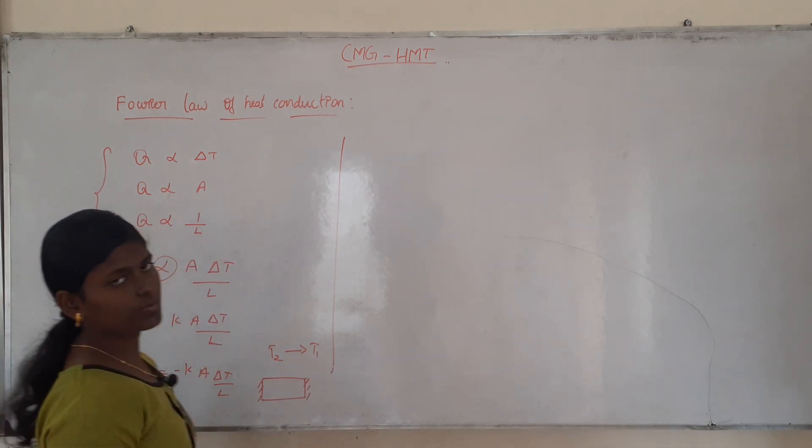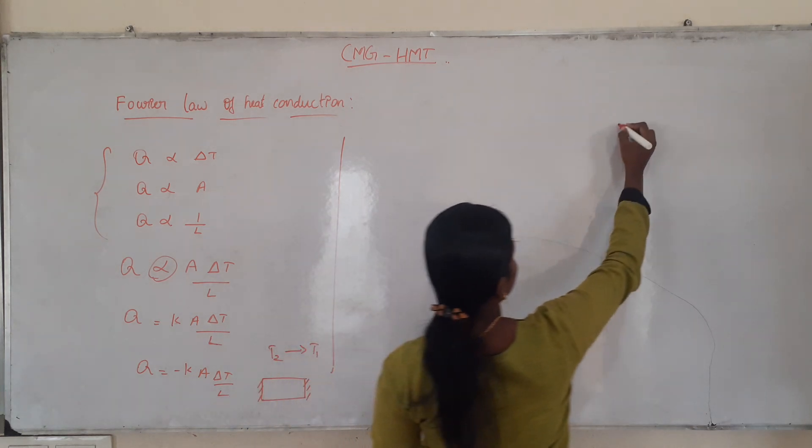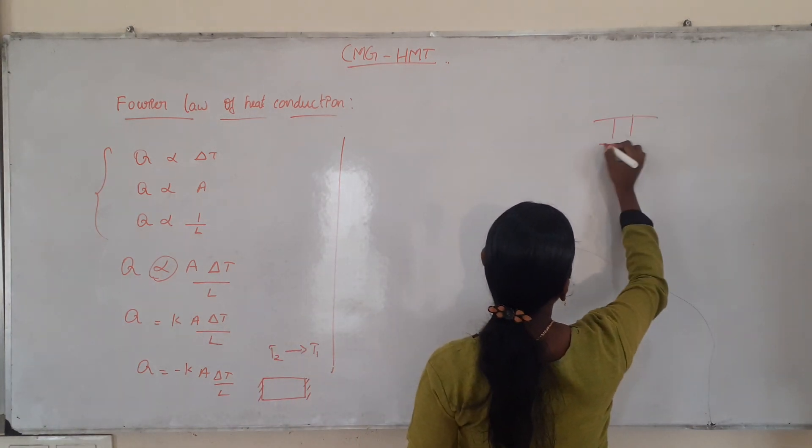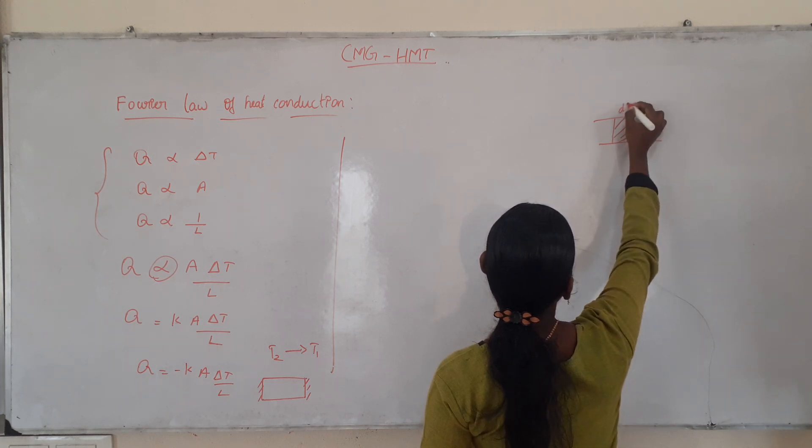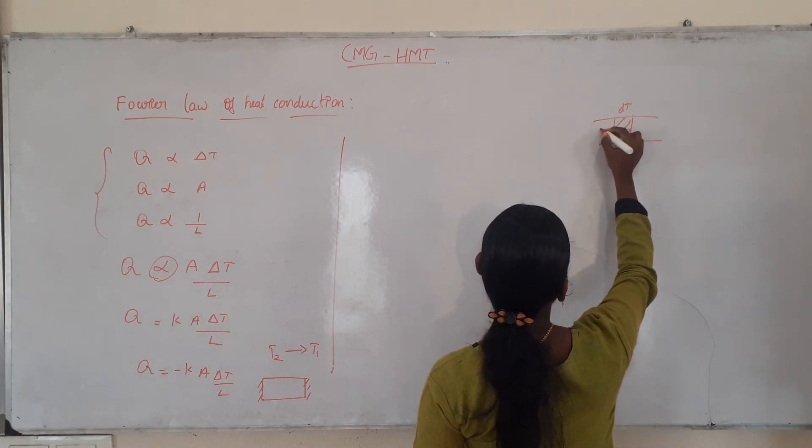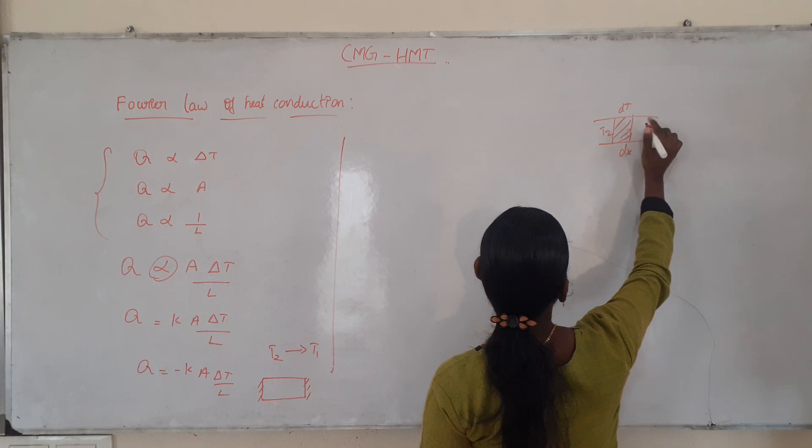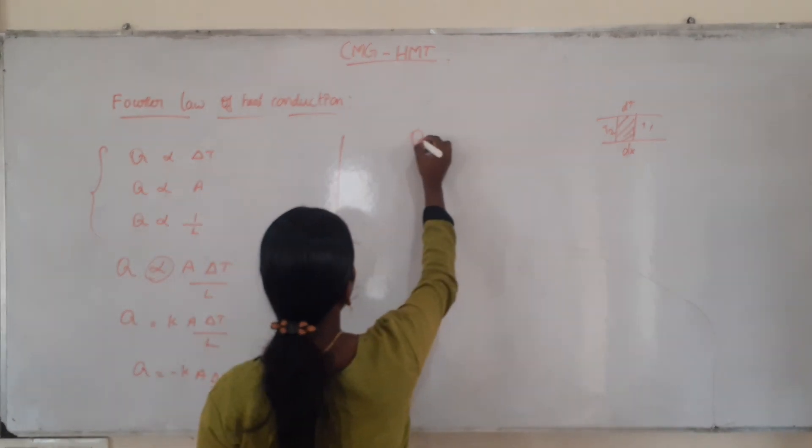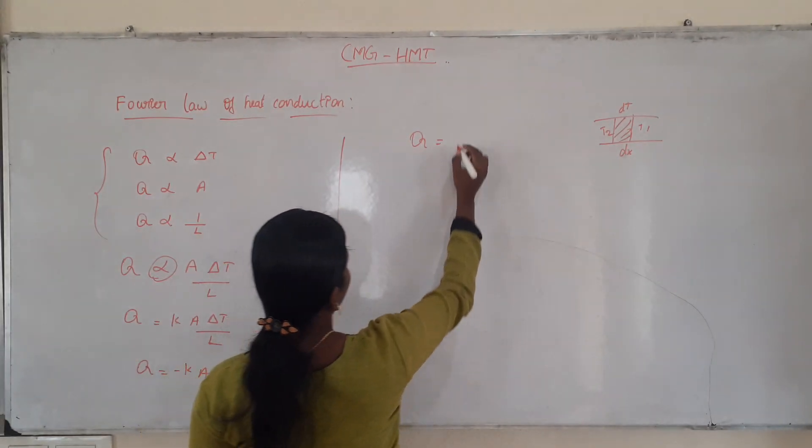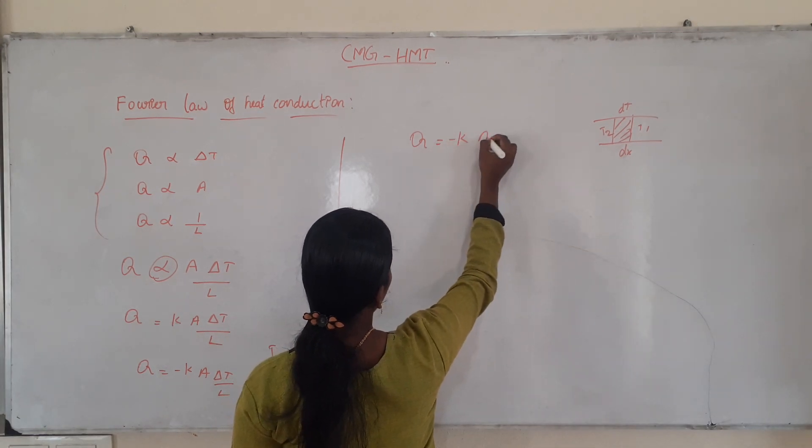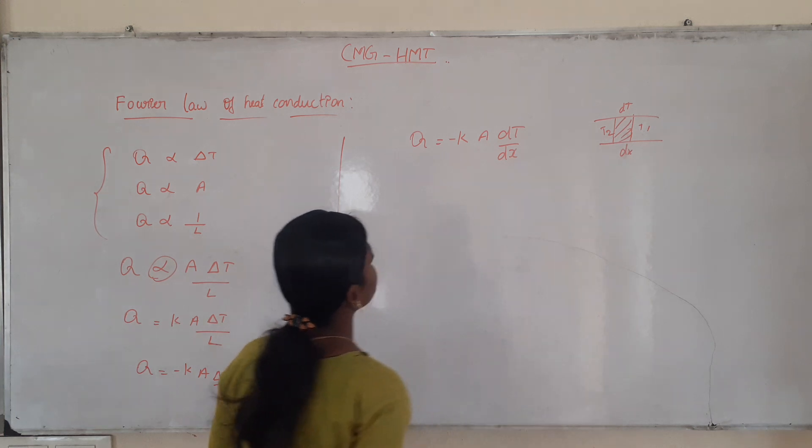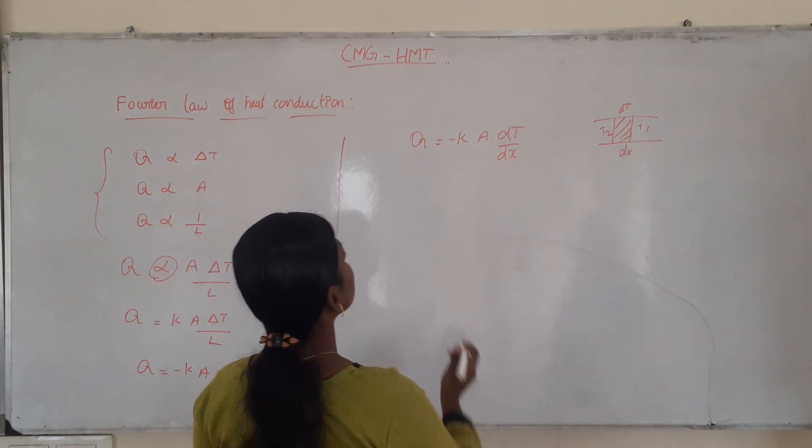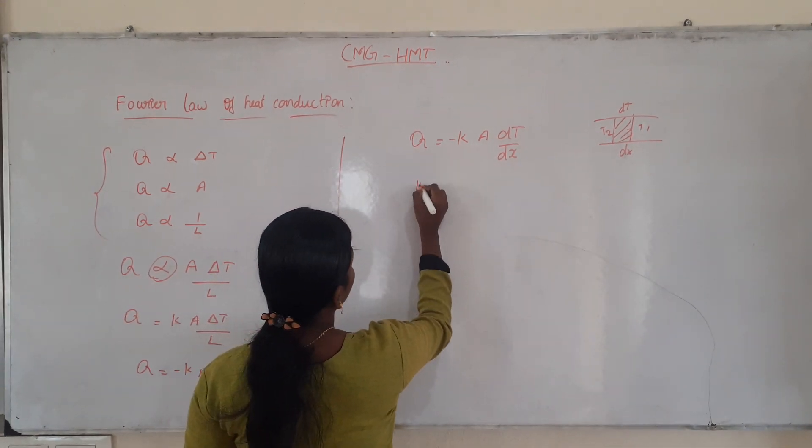This is for the full length bar. And this is for the elementary bar: q equal to minus ka dt by dx. This is for elementary length of bar.